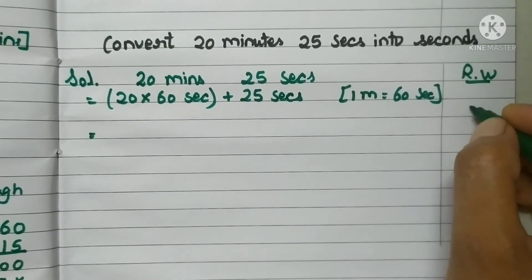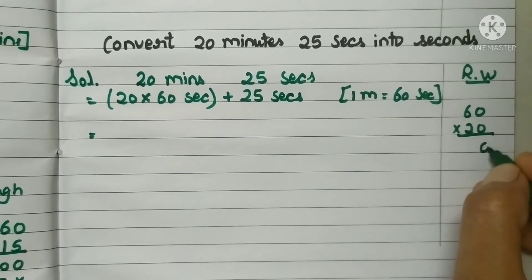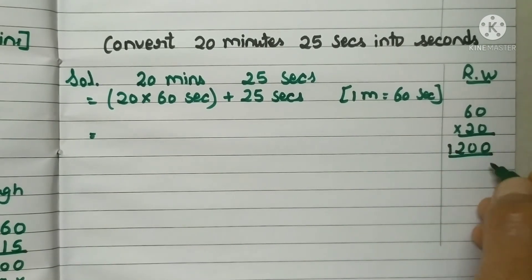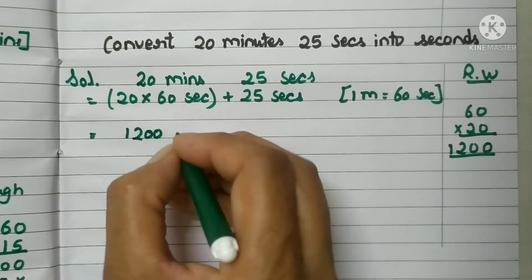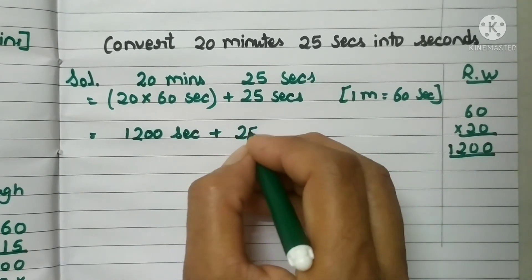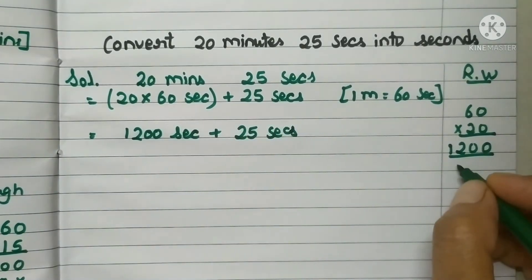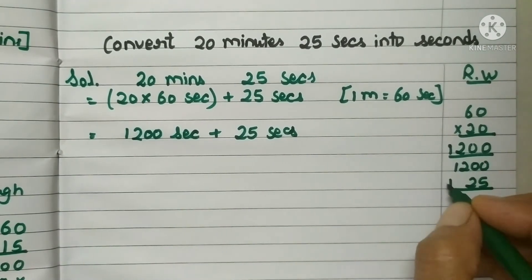So instead of 20 minutes, I can cross multiply it with 60 seconds, because this minute is equals to 60 seconds. Put in a bracket. Then plus, add 25 seconds. Now we will do multiply 20 into 60. 20 zeros are 0, and 20 sixes are 120. Now here we will get 1200 seconds. We will add in this 25 seconds. And then we will add 25 to 1200 seconds.